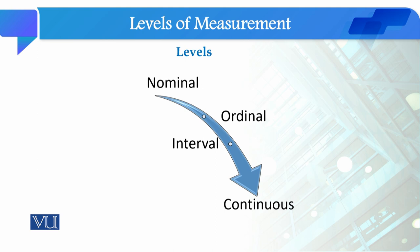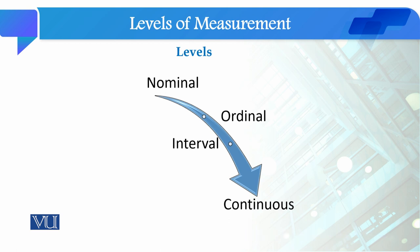We can say the nominal level is the primary level of a variable, and the continuous level is the optimum level of measurement. So if you have a variable in continuous form, you can perform more statistical analysis compared to a variable in nominal, ordinal, or interval form. You can apply multiple statistical techniques to analyze the data.